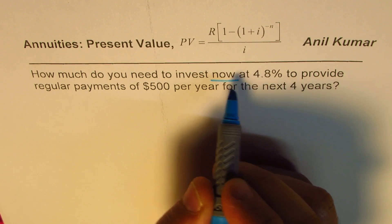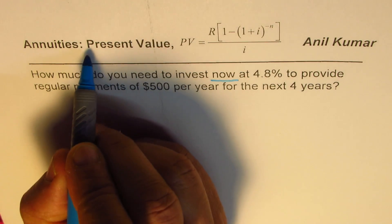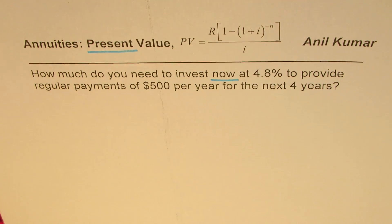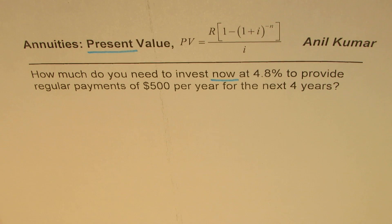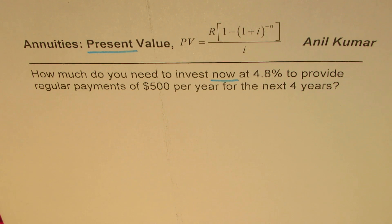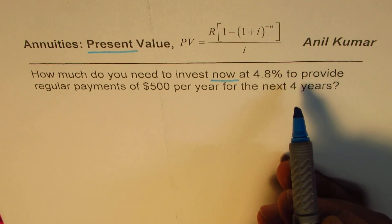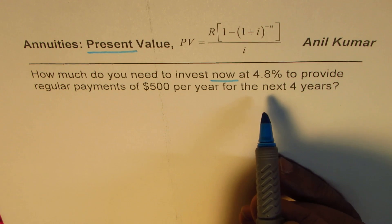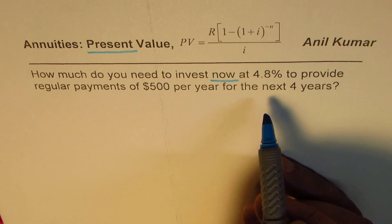That word 'now' relates to present value — it's a key word which helps you figure out whether it is future value or present value. So you have to identify these words so that you can apply the correct formula. Now let's look into the question, draw a timeline, and understand how to solve it.